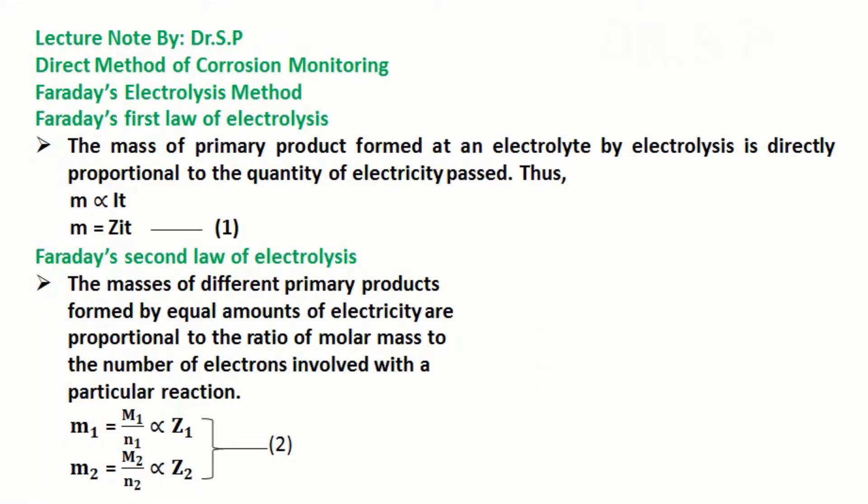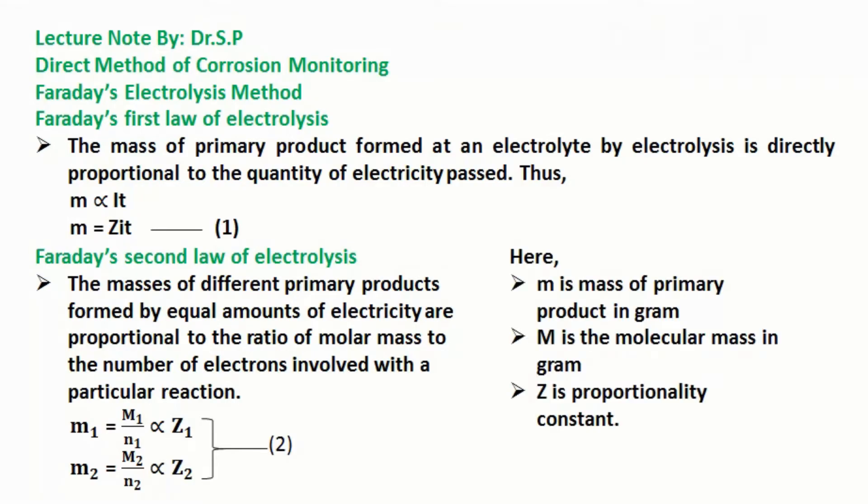Faraday's second law of electrolysis states that the masses of different primary products formed by equal amounts of electricity are proportional to the ratio of molar mass to the number of electrons involved with a particular reaction. M1 equals M1 by N1 proportional to Z1, and M2 equals M2 by N2 proportional to Z2, where small m is mass of primary product in grams, capital M is molecular mass in grams, and Z is proportionality constant.